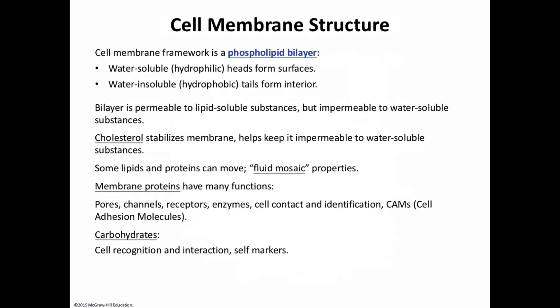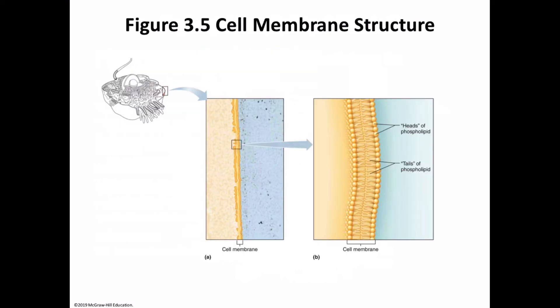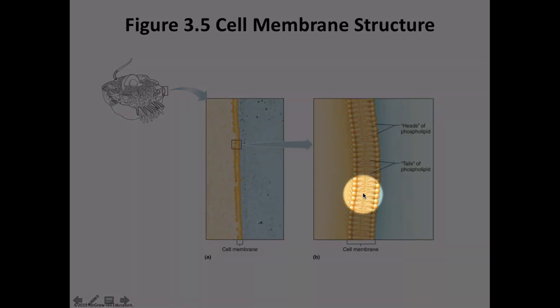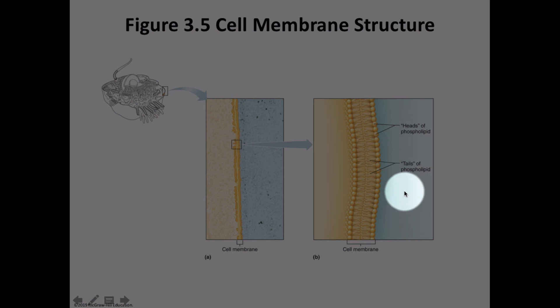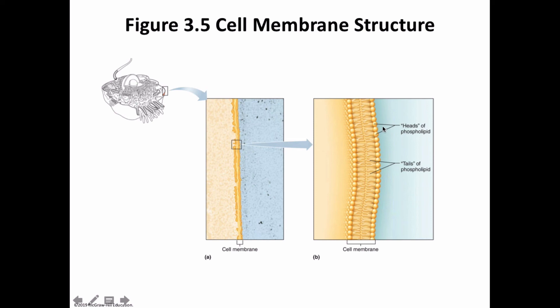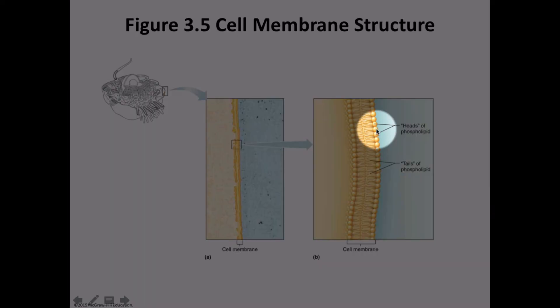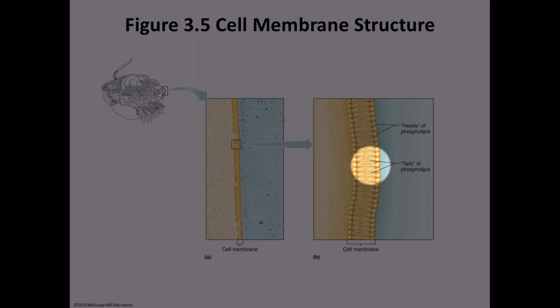The cell membrane is composed of that phospholipid bilayer — glycerol heads and fatty acid tails. As shown in figure 3.5b, this is that phospholipid bilayer, that cell membrane, that plasma membrane, keeping what's in the cell in and what's outside outside. Those small circles are glycerol heads, and the tails are made up of fatty acids — each phospholipid consisting of a glycerol head and two fatty acid tails.